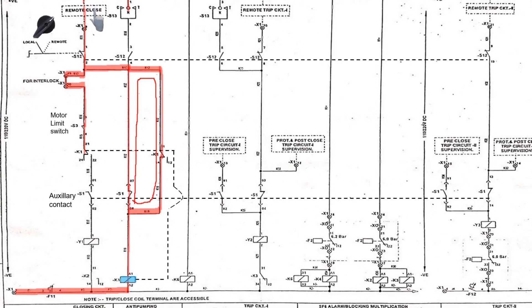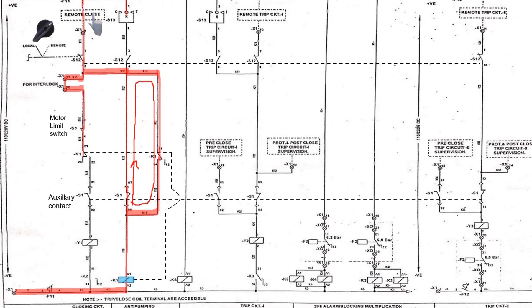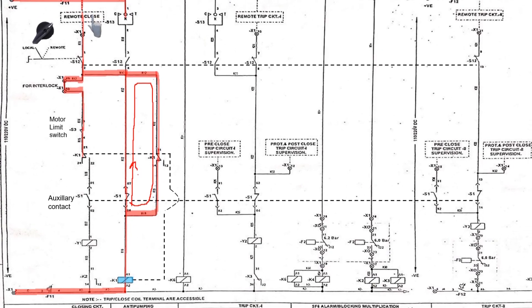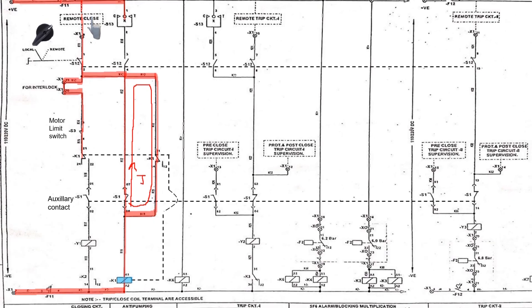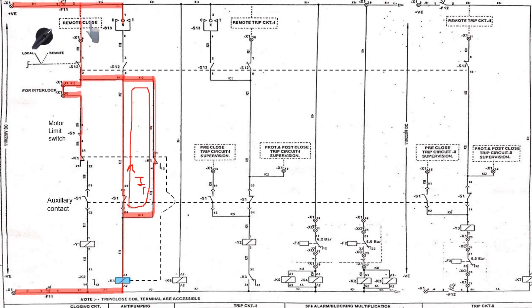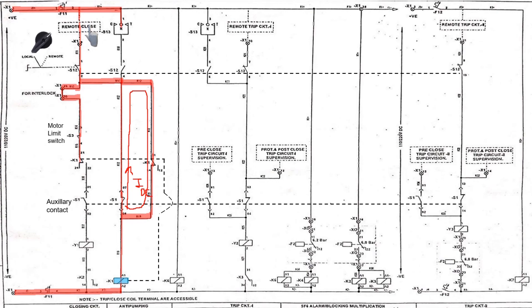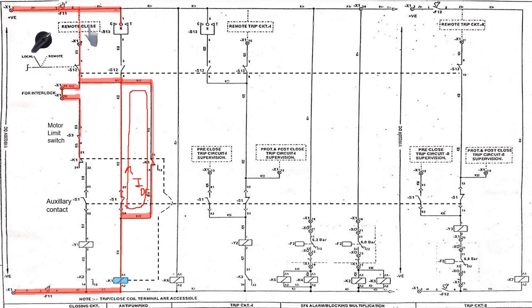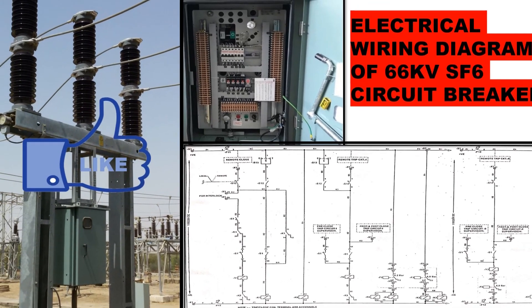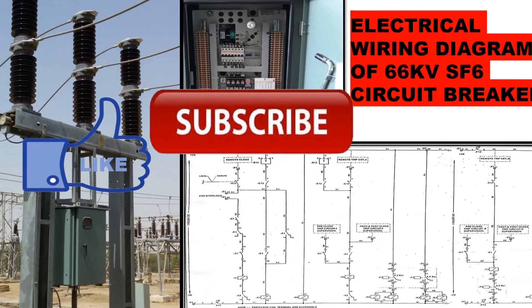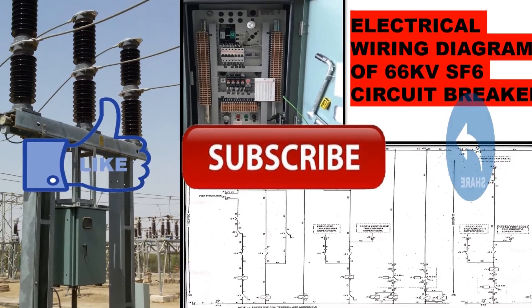This completes the closing circuit of a 66kV circuit breaker in remote mode. In the next upcoming video, we will see the closing circuit in local mode and how it operates. For more upcoming videos, keep on liking, subscribing, and sharing. Thank you.